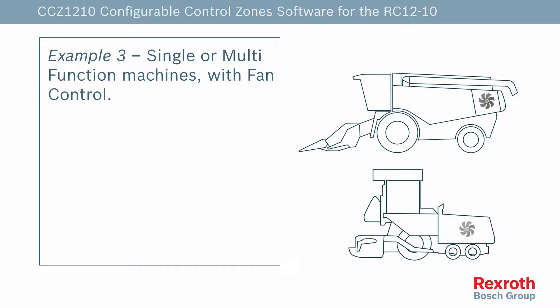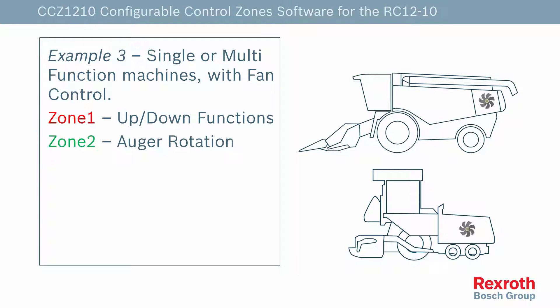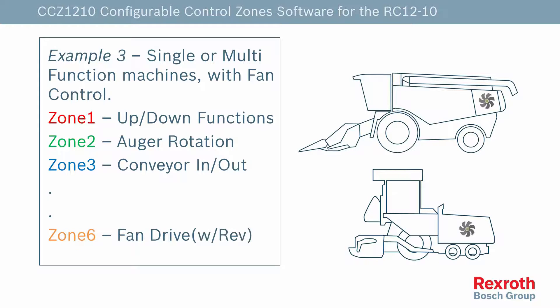Our last example shows a couple of multi-function machines that also have a fan drive on the machine. We are using the first three zones to control various functions on the machine and then zone 6 specifically to control the cooling fans.